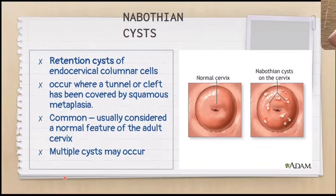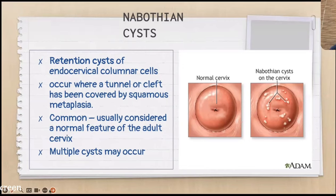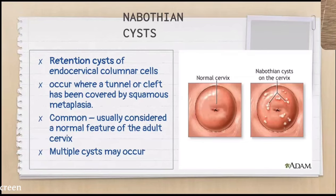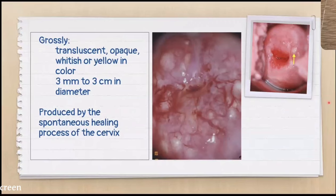Nabothian cysts are tension cysts of endocervical columnar cells. They occur where a tunnel or cleft has been covered by squamous metaplasia, and are considered a normal feature of the adult cervix. When you do a pap smear, you'll be able to see nabothian cysts near the squamous columnar junction. Grossly they are translucent, opaque, whitish, or yellow in color. They can undergo spontaneous healing through the natural healing process of the cervix.